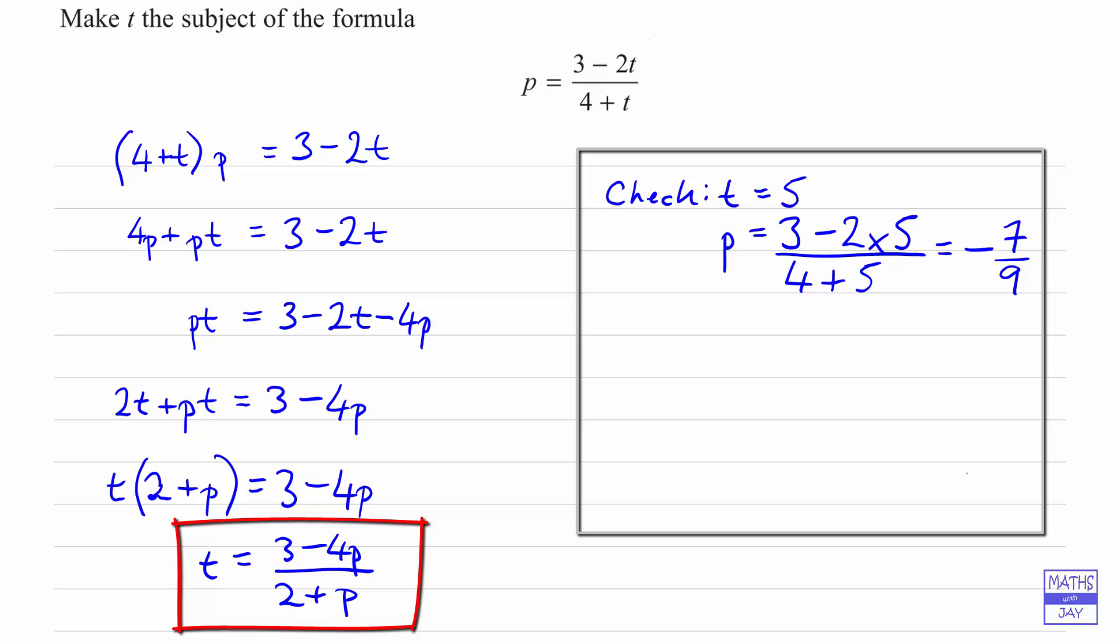And the way we can check our final answer is we can put p as minus 7 ninths into our formula, and see if t does come out to be 5. So let's have a look.